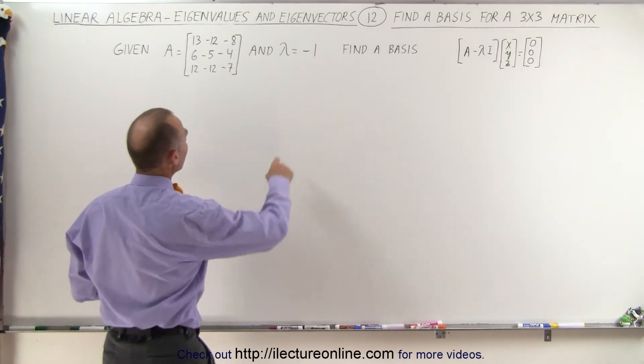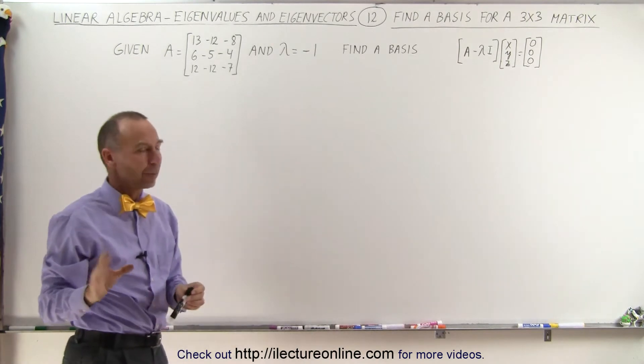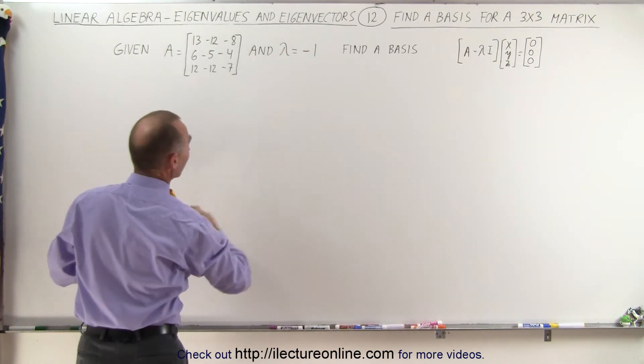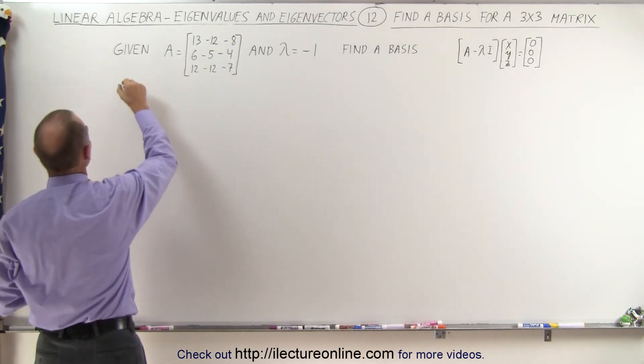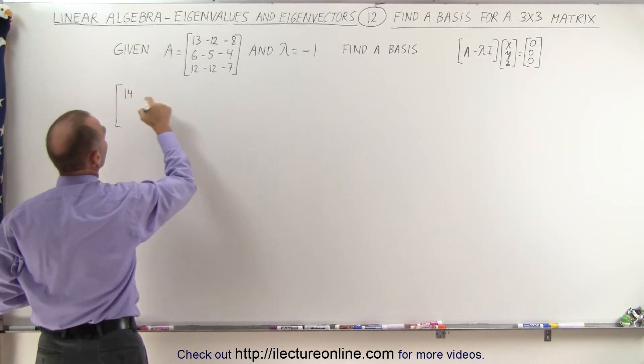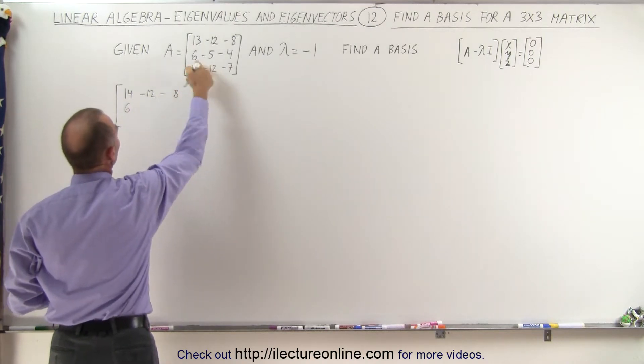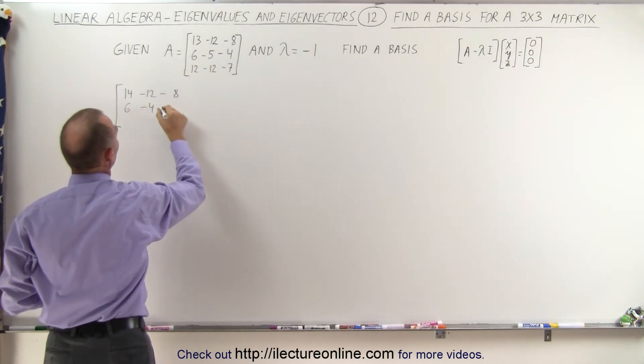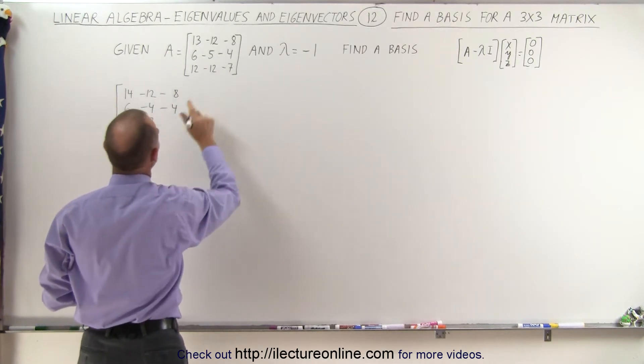So we're going to subtract a minus 1 from each of the diagonal elements. Well, subtracting minus 1 is like adding a plus 1, and so the matrix becomes as follows. When we multiply times the vector, we get the following. We get 13 plus 1 gives us 14, minus 12, minus 8. Here, we get 6, minus 5 plus 1 is minus 4, and minus 4, and here we have 12 minus 12, and a minus 7 plus 1 is a minus 6.